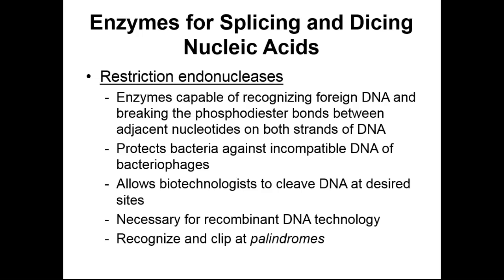These restriction endonucleases recognize very specific regions on our DNA fragments. These regions are read the same forwards as they are backwards — they are known as a palindrome. My favorite palindrome is Taco Cat. Taco Cat will always spell Taco Cat if you spell it forwards or backwards.